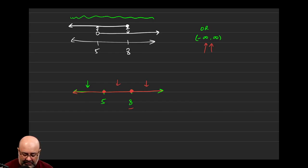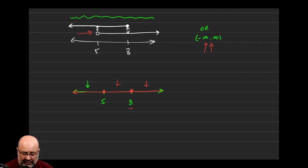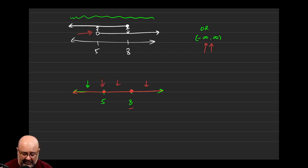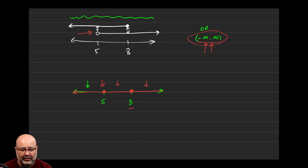Just because 5 was not a solution to one of the two inequalities does not mean that 5 is not a solution to the compound inequality. 5 was not a solution to one of the inequalities, but is it a solution to the OR problem? Yes. The mistake is that students are expecting this to be an open circle. It can't be an open circle, because all real numbers are solutions — if you make it an open circle, you're saying 5 is not a solution. Hopefully this helps clarify the issue folks might be experiencing.